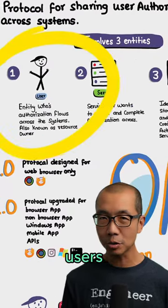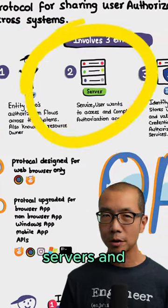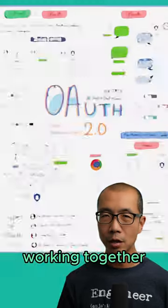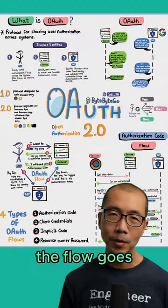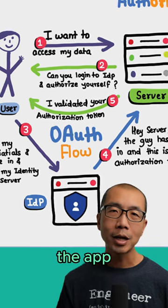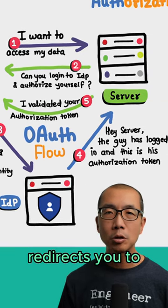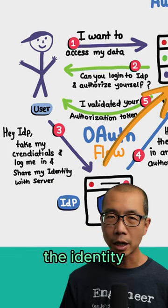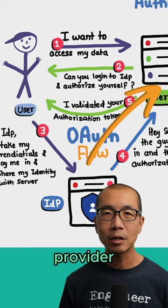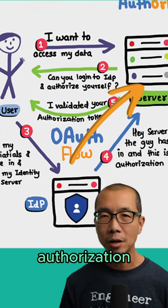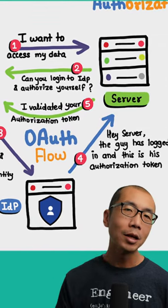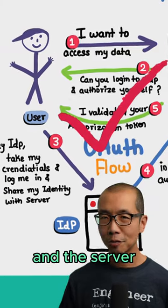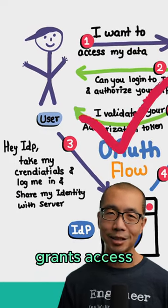So OAuth is users, servers, and identity providers working together. The flow goes: you try to use an app, the app redirects you to login at the identity provider, the identity provider sends an authorization token to the app, the app shows the token to the server, and the server grants access.